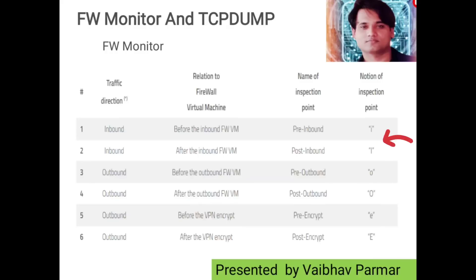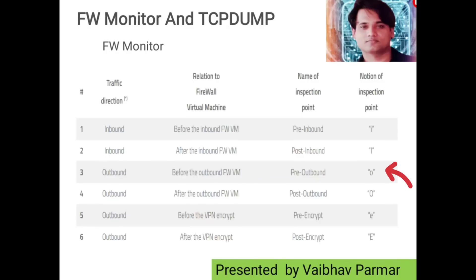Stage two: when a packet enters the firewall and is verified against the policy, fw monitor gives you the notation big 'I'. This stage is also referred to as post-inbound. Stage three: when a packet passes through the NAT policy inspection or NAT table, fw monitor shows the notation small 'o'. This stage is also referred to as pre-outbound.